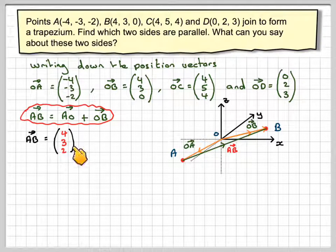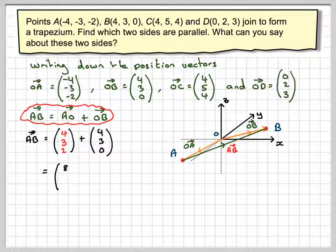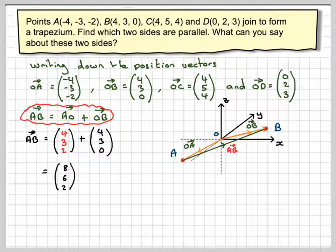So we'll get (4, 3, 2) plus, these signs stay the same, (4, 3, 0). So we get 4 plus 4, which is 8, 3 plus 3, which is 6, and 2 plus 0, which is 2.